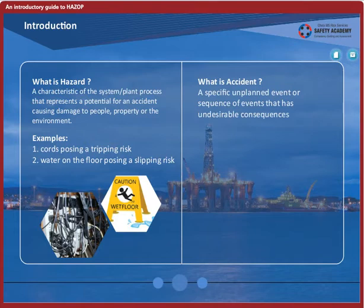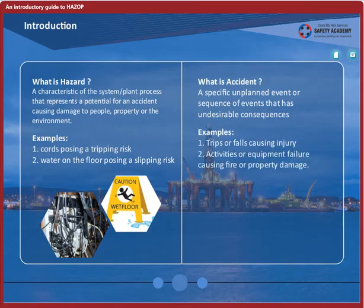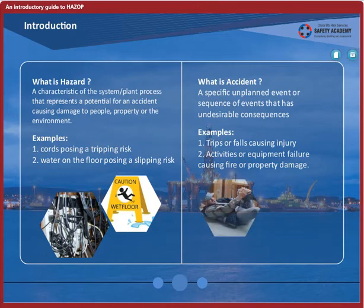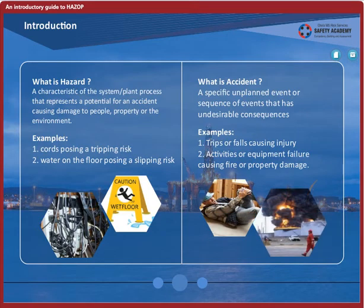What about an accident? How would you define an accident? A specified unplanned event or sequence of events that has undesirable consequences is defined as an accident. When trips or falls happen causing injury, that becomes an accident. Another example could be an equipment failure causing fire or damage to property.